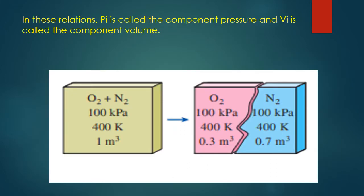In these relations, P_I is called the component pressure and V_I is called the component volume. The figure shows a container on the left with a mixture of oxygen (O₂) and nitrogen (N₂). On the right, the two gases are shown separately — both at the same pressure (kPa) and temperature (Kelvin), but with different volumes: oxygen occupies 0.3 m³ and nitrogen 0.7 m³, combining to exactly 1 m³ in the mixture.